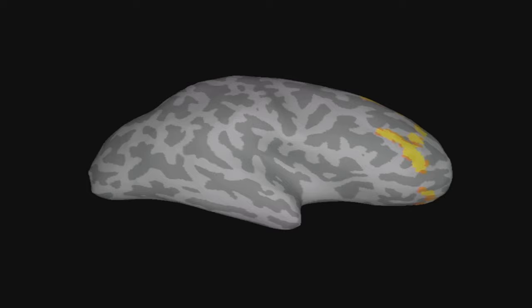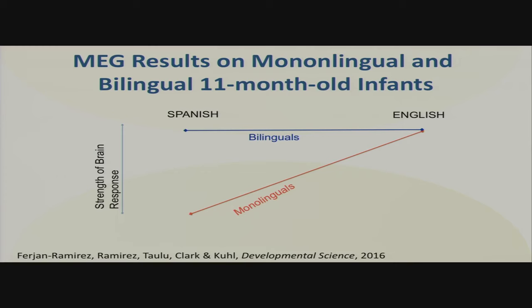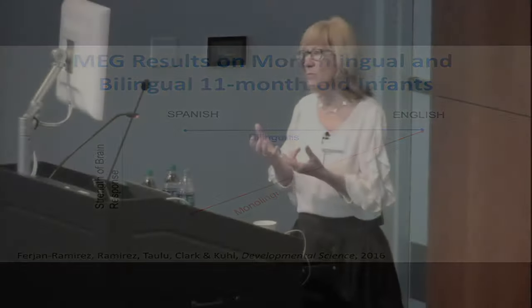Here's the statistical result. Monolinguals are doing exactly what we thought — their sophistication for Spanish is not there at this 11-month age. They're good at English. But the bilingual babies are equally strong in representing English and Spanish, which is very good news because people believe incorrectly that exposure to two languages is somehow dampening the response to the primary language. Nothing like that is the case if kids are getting native input in both languages at the same time.